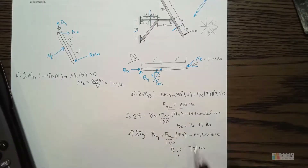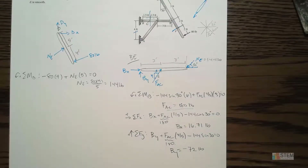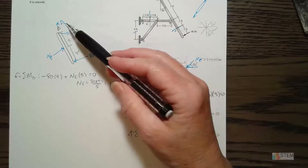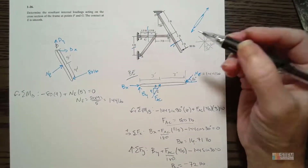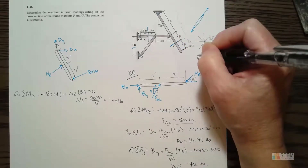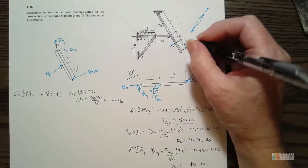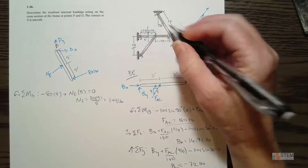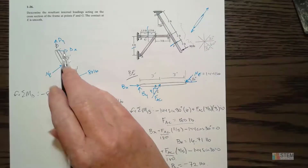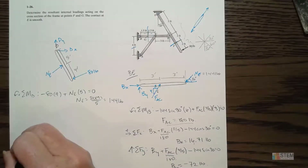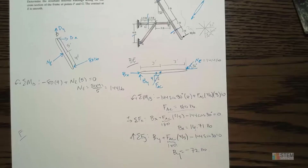Now we can go ahead and do the internal forces, starting with F. I said we don't even need DX and DY — because we can choose either side of the section cut. This section here on the right doesn't have the E point or D, so if I use the right section I don't need to know what's going on at D. That's why I didn't need to solve for those. Let's choose this section because it'll be easier with fewer equations.